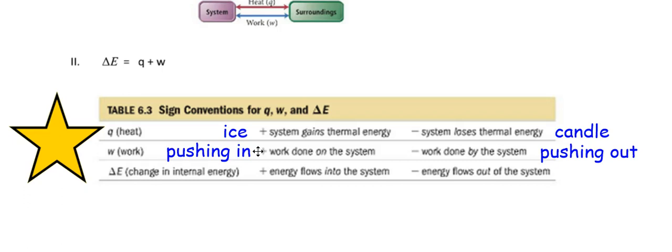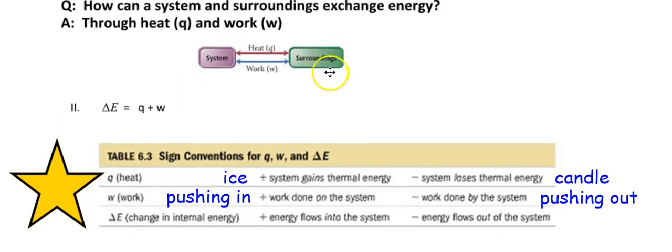Delta E: if it's positive, energy flows into the system; if it's negative, energy flows out. Keep that handy — if you need to go back to this page, do so. It's all about the idea of systems and surroundings and the relationship between the two, and that is a big deal.